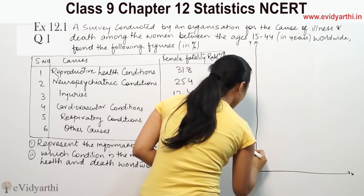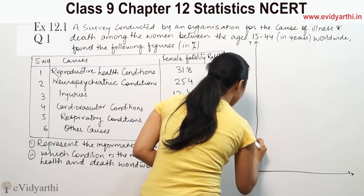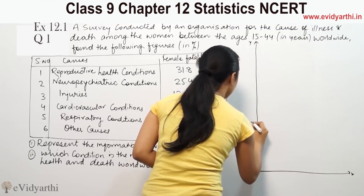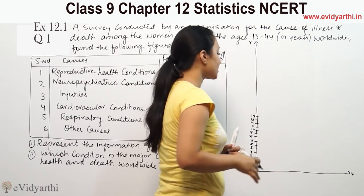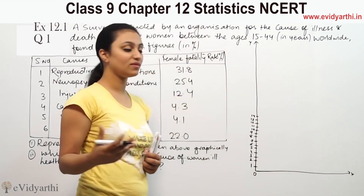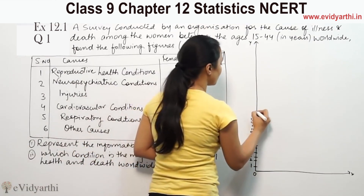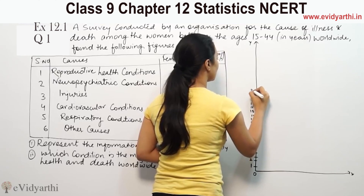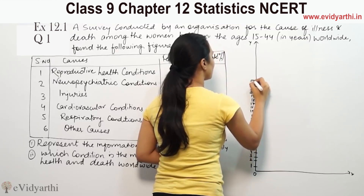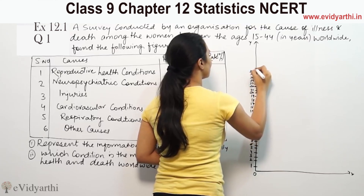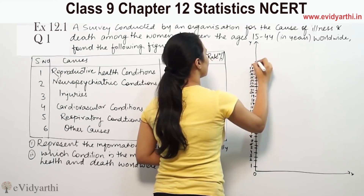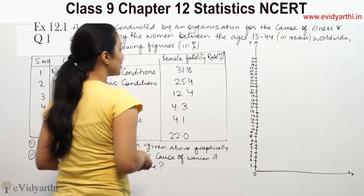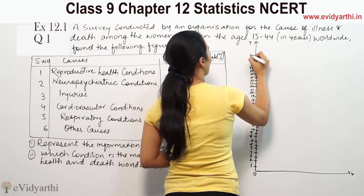Counting along the axis: 1, 2, 3, 4, 5, 6, 7, 8, 9, 10, 11, 12, 13, 14, 15, 16, 17, 18, 19, 20, 21, 22, 24, 25, 26, 27, 28, 29, 30, 31. Our first value is reproductive health conditions at 31.8, so the last point will be around 32.